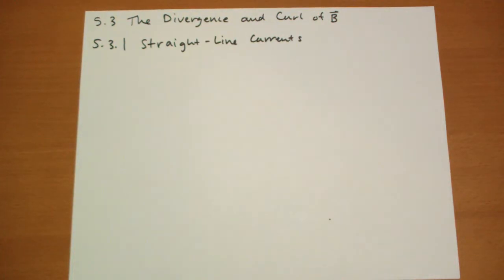Hi, this is Jonathan Gardner. We're into section 5.3 of Griffith's Introduction to Electrodynamics. This first part we're going to investigate straight line currents, infinite straight line currents, which we did for example 5 in the previous section.